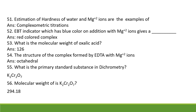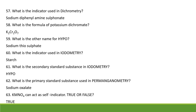EBT (Eriochrome Black T), which has blue color, on addition with Mg²⁺ ions forms a red-colored complex. What is the molecular weight of oxalic acid? It is 126. When EDTA reacts with Mg²⁺ ions, a colored complex is formed whose structure is octahedral. The primary standard substance in dichromatometry is K2Cr2O7, and its molecular weight is 294.18. The indicator used in dichromatometry is sodium diphenylamine sulfonate.